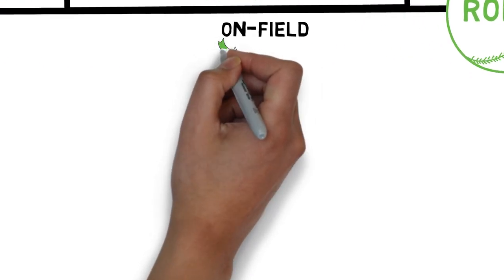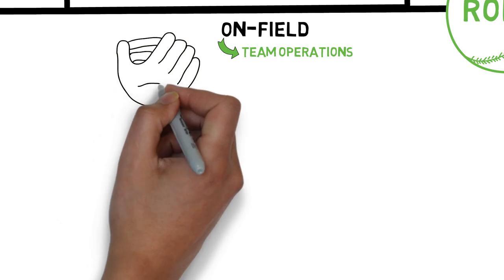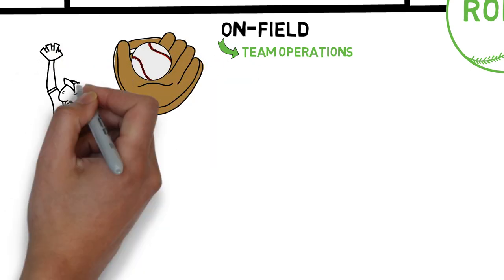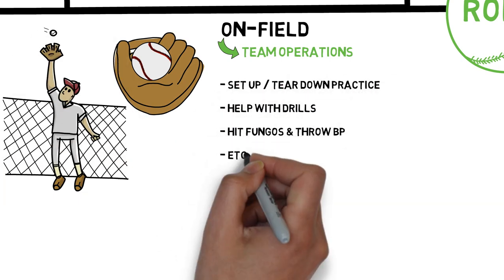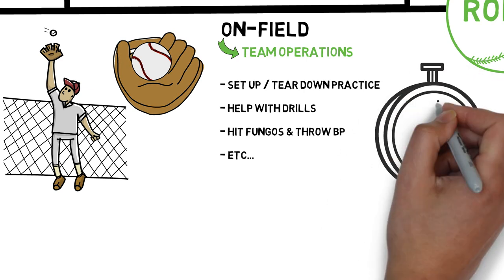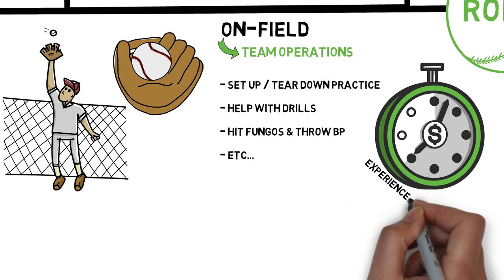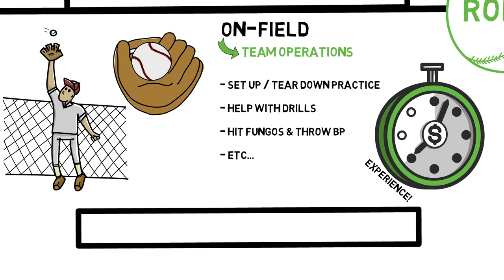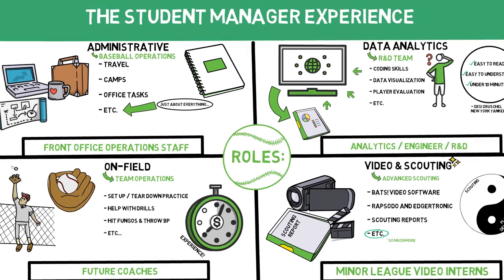Lastly is your typical on-field staff. This team isn't any more or less important than the rest of them, but it is what you would picture your typical student managers assisting with. These guys are essential to the flow of practice by helping with setup and teardown, running drills, hitting fungos, and throwing BP. This is a role that may be the most time-consuming, but it is quite rewarding in the amount of exposure you get to the way a D1 program operates. In my opinion, this job sets you up for a coaching role at best, as you get to be on the field interacting with players and coaches every day to see how the team operates as a whole over a long period of time.